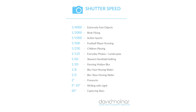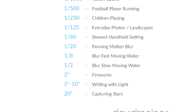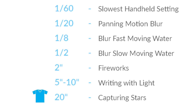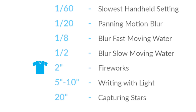On the chart, the longer duration end starts at 20 seconds — that's for capturing stars in the night sky, really letting a lot of light soak in. Five to ten seconds is for light painting, like sparklers and similar effects. Two seconds is for fireworks. Going up to 1/60th of a second is the slowest for handheld shooting. Everything below that — 1/20th, 1/8th, and similar values for blurring fast or slow moving water — all of those require a tripod so you don't end up with camera shake.